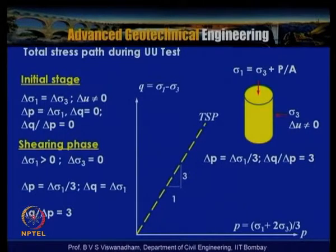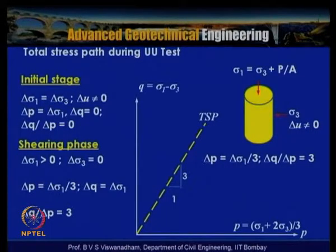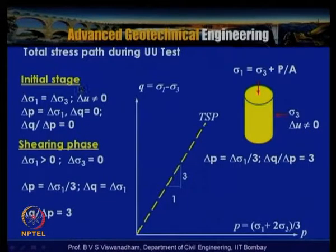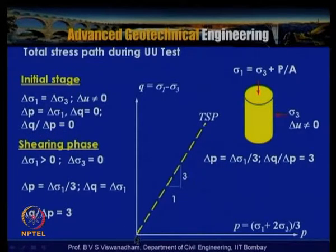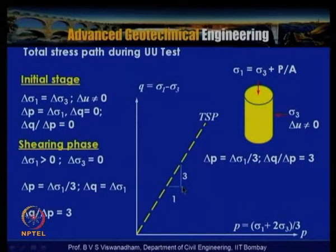The total stress path during the UU test starts directly at the initial p value (no consolidation phase along q = 0). During the initial application of cell pressure, Δσ₁ = Δσ₃ so Δq = 0 and Δp = Δσ₁, moving along the p-axis. During shearing, Δσ₃ = 0, Δσ₁ > 0, so Δp = Δσ₁/3, Δq = Δσ₁, and Δq/Δp = 3—the same slope of 3 as in other tests for the shearing phase.